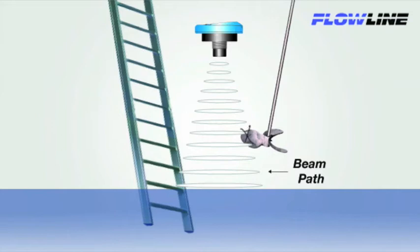Here, we have a mixer that's inside the beam path, and it's giving off a reflection that can be falsely detected as liquid level. We also have a ladder that's inside the beam path, and it too is giving reflections that can be falsely detected as liquid level, when the true liquid level is here.